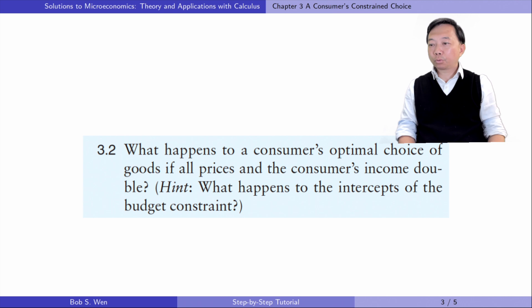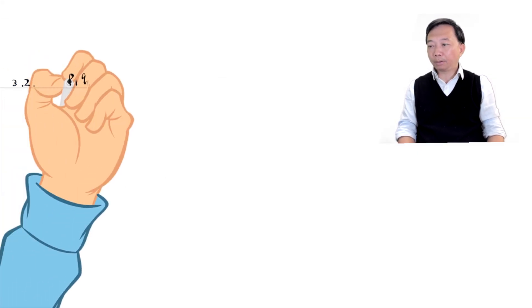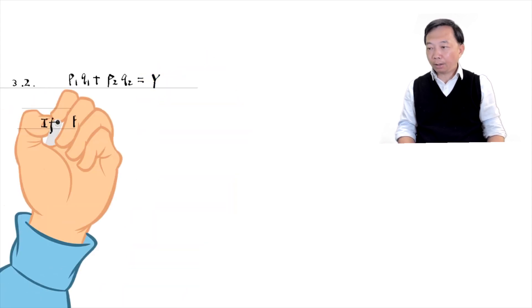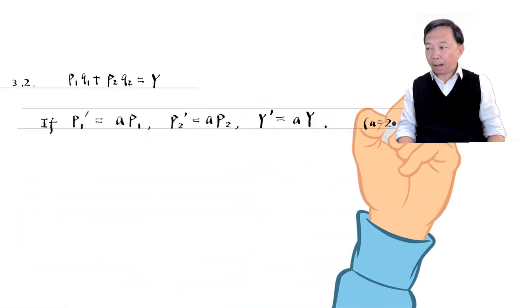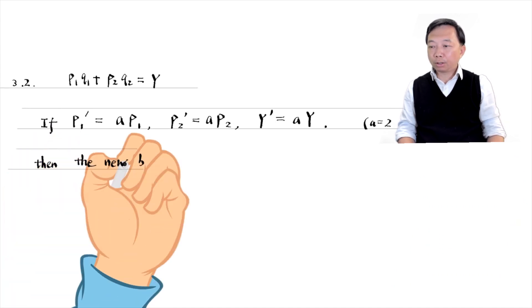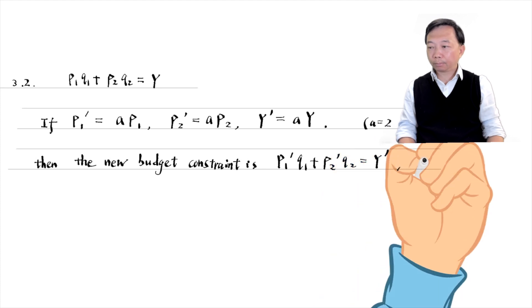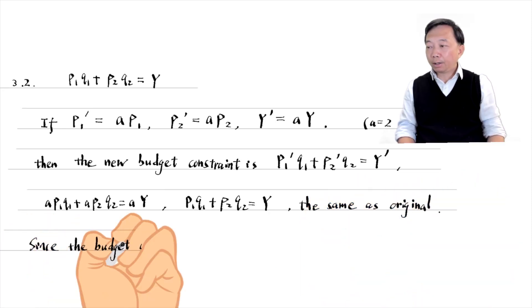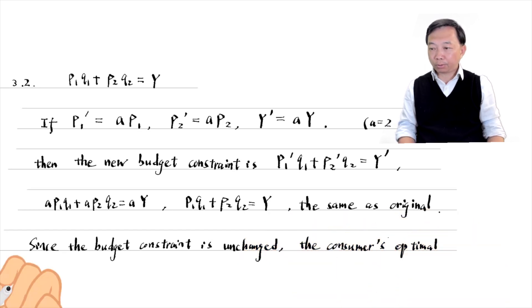Let's find answers to exercise 3.2. What happens to a consumer's optimal choice of goods if all prices and the consumer's income double? We can prove that if the consumer's income and the goods prices change by the same proportion, the consumer's budget constraint is unchanged. Suppose the original budget constraint is as follows. If the prices and the consumer's income are multiplied by a constant A, the new budget constraint is the same as the original one. Since the budget line is unchanged, the consumer's optimal choice is also unchanged.